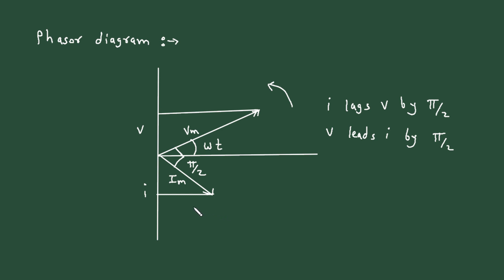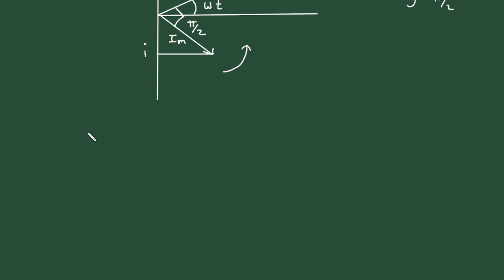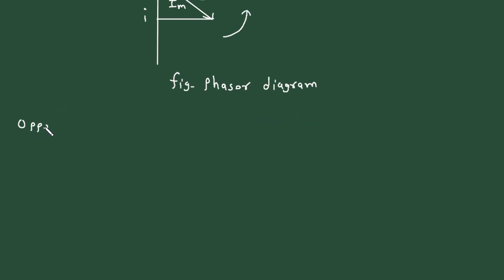The direction of rotation of the current phasor is also counter-clockwise or anticlockwise. This is the phasor diagram, showing opposition to current due to the inductor.